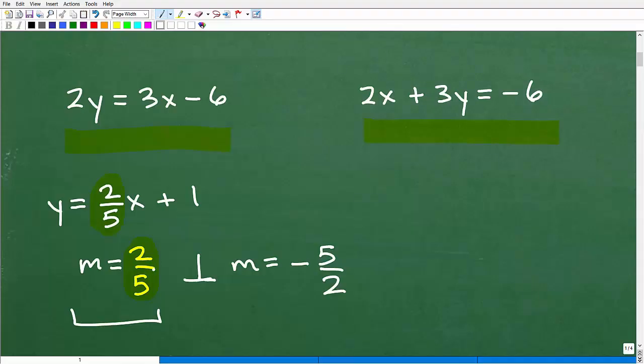So that's what you need to know. If you have a line like this line here, any line that's perpendicular to it, its slope will be the negative reciprocal of the slope of the line you're comparing it to.